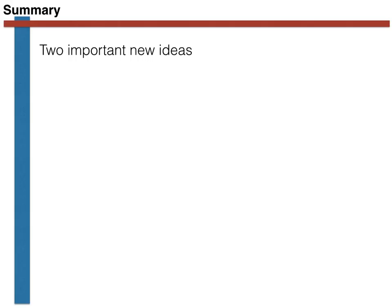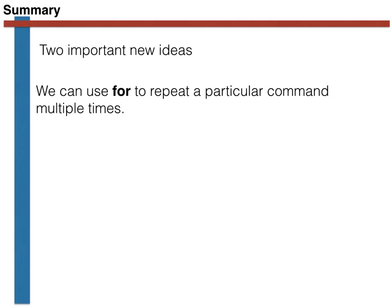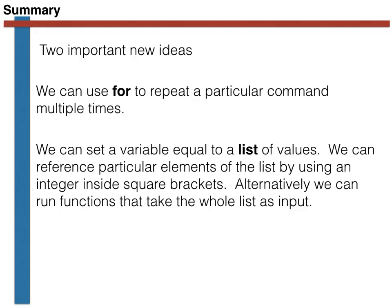What we have seen is that we can use a for loop to repeat a command or commands multiple times in our computer programs. Furthermore, we have seen how we can set a variable equal to a list of values, how these lists of values can be passed to functions, and how we can reference particular elements in the list by using an integer inside a square bracket.